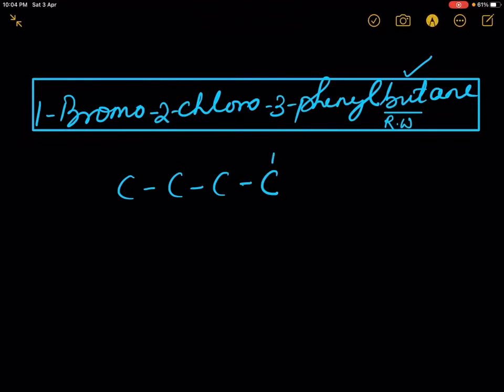Numbering of the carbon chain can be done from both sides: 1, 2, 3, 4, or you can do numbering from this side also.